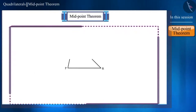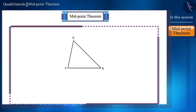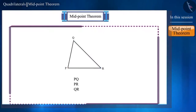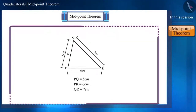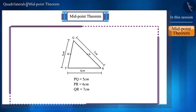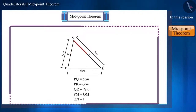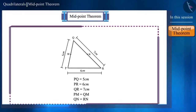Friends, draw a triangle PQR, the lengths of whose sides PQ, PR and QR are 5 cm, 6 cm and 7 cm respectively. Now, suppose the midpoint of side PQ is M and the midpoint of QR is N. That is, PM is equal to QM and QN is equal to RN. Draw a line segment MN by joining the points M and N.